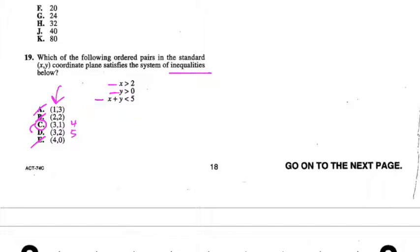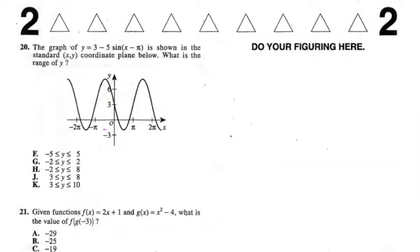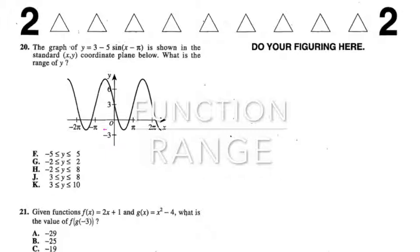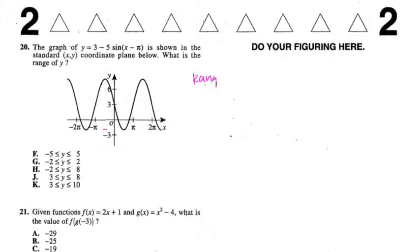Number 20 is a function question dealing with range. Range is highest value minus lowest value, but in this case, if we look at the answer choices, they actually want an inequality. If we look at the highest value, which is here above 6, and the lowest value, which is a negative number, this gives us enough to really eliminate all the answer choices but one.